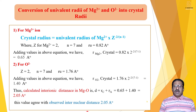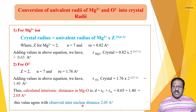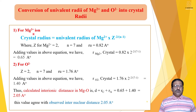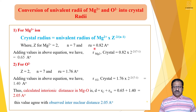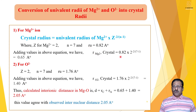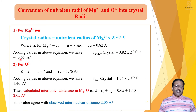Now we see an example: conversion of univalent radii of Mg²⁺ and O²⁻ ions into crystal radii. For Mg²⁺, we write: R crystal = R_U(Mg²⁺) × Z^(−2/(N−1)). For magnesium, Z is 2 and N is 7. The univalent radius R_U is 0.82 Å. Substituting: R(Mg²⁺) crystal = 0.82 × 2^(−2/(7−1)) = 0.65 Å. So the crystal radius of Mg²⁺ is 0.65 Å.